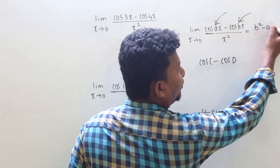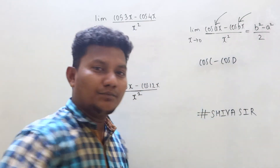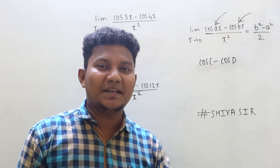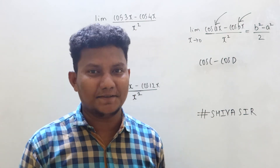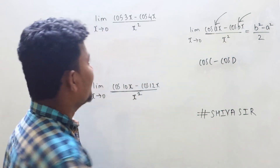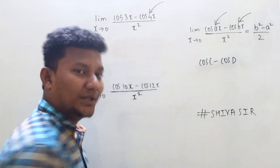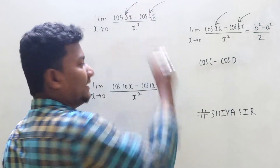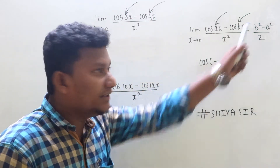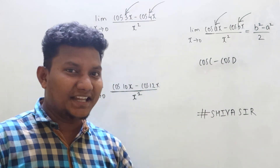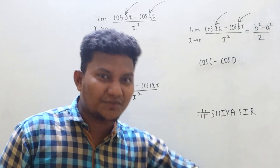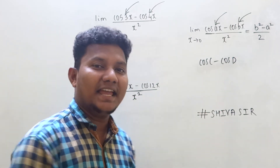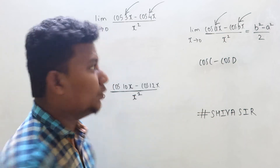Whenever the question is in the form of cos(ax) minus cos(bx) upon x square, simply apply the formula: b square minus a square upon 2. You will get the answer. So what is b in our problem? That is 4. What is a? That is 3. Apply it in the formula: b square minus a square upon 2.